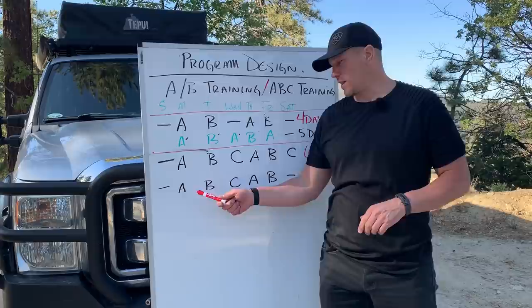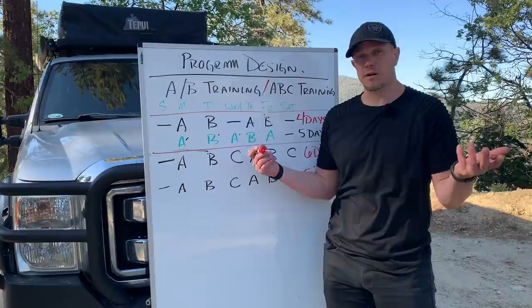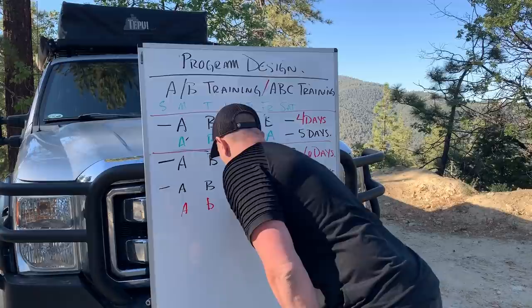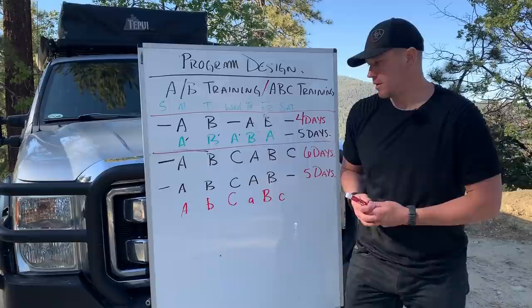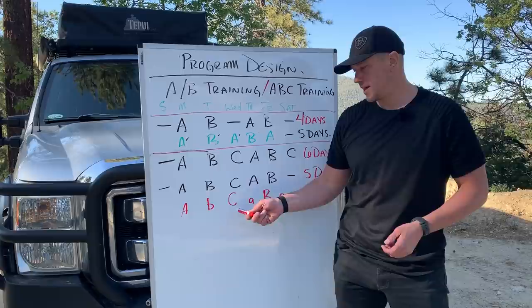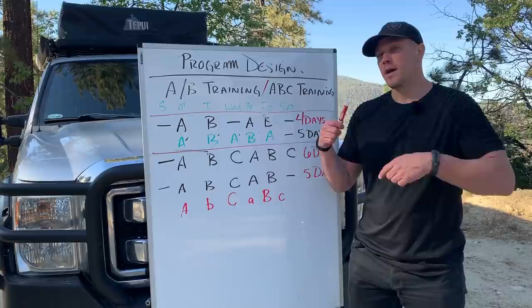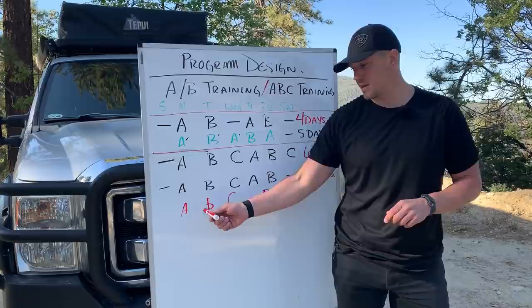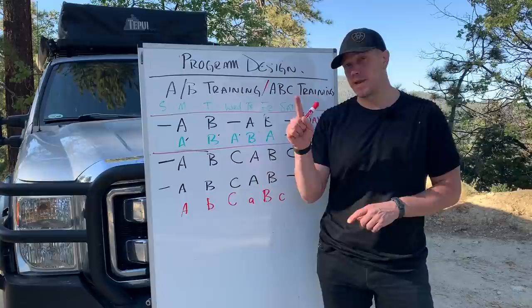You could demonstrate the heavy-light by making capital A's heavy and small a's light. So: capital A, lowercase b, capital C, little a, big B, small c — it's A, B, C, A, B, C — but it is heavy, light, heavy, light, heavy, light. Then start over: heavy, light. The point of the heavy-light is that it is a built-in step-down day while you're still working on your skills.